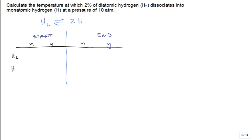Let's start off the process and say it starts conceptually at low temperature. Let's start with one kilomole of diatomic hydrogen and zero kilomoles of monatomic hydrogen. So the total is one, and the mole fractions are 100% and 0%.